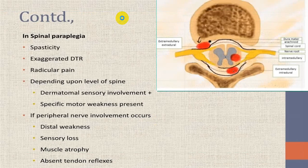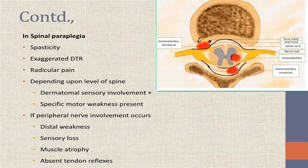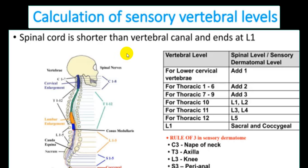The lecture will not cover spinal cord hemisection, complete transection, central cord damage, anterior cord damage, and cauda equina in detail — a separate full video lecture on spinal cord injury/disorders will cover those topics. For identifying sensory level: rule of three — C3 at the neck, T3 at axilla, L3 at knee, S3 perianal region. Lower cervical: add 1; upper thoracic: add 2; lower thoracic (T7-9): add 3; at T10 — L1; T11 — L3-4; T12 — L5; L1 — sacral and coccygeal.